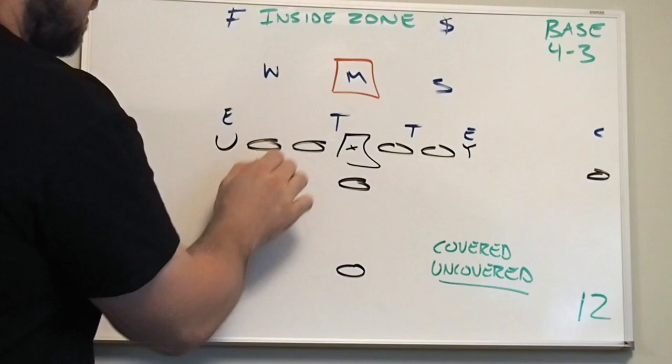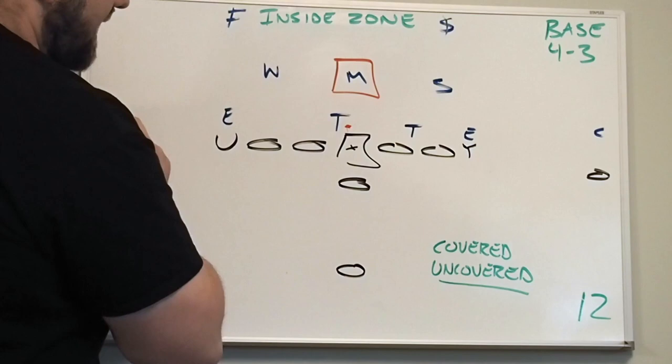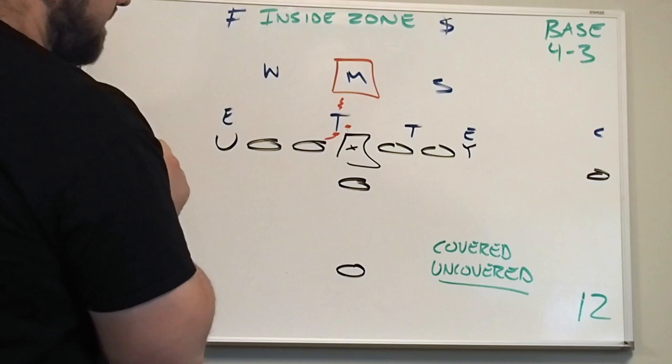If he's aligned on the center, the center can get a good piece of him. He'll step with his right foot first and then his left foot to get a piece of that defensive tackle, and the guard will come in here to finish up their double team and they'll move the guy off the ball vertically. You want to take the defensive lineman and move him to the linebacker.